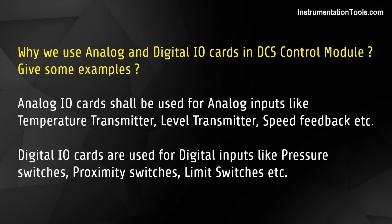Why do we use analog and digital I/O cards in a DCS control module? Analog I/O cards shall be used for analog inputs like temperature transmitter, level transmitter, speed feedback, etc. Digital I/O cards are used for digital inputs like pressure switches, proximity switches, and limit switches.